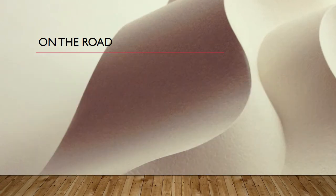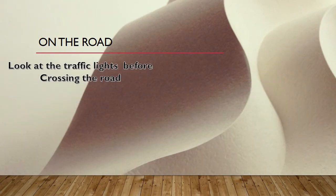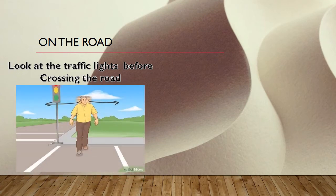Next rule: look at the traffic lights before crossing the road. You should look at the traffic lights — whether it is green, red, or yellow — before crossing the road. You should cross only according to what the traffic light shows.